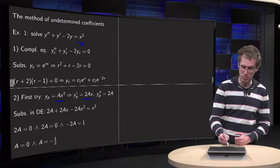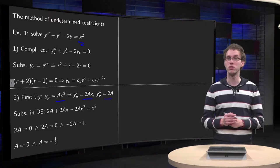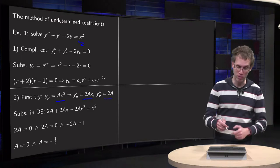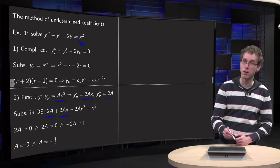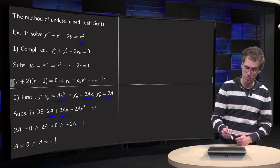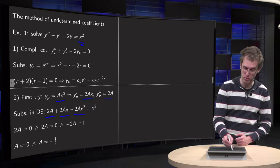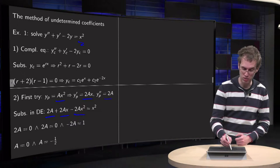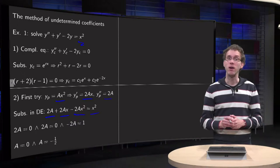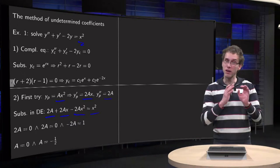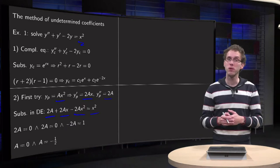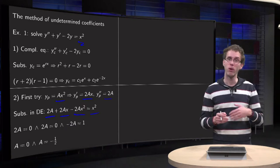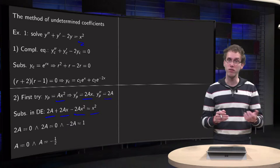We compute yp' = 2ax and yp'' = 2a. We plug all of that into our differential equation: yp'' + yp' - 2yp = x². On the left-hand side we have a polynomial, and on the right-hand side we have a polynomial. Polynomials are only equal if all their coefficients are equal.